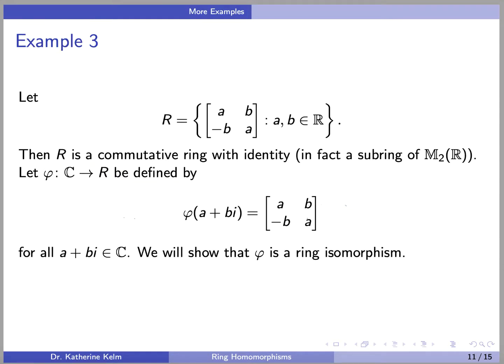For another example, let R be the ring of matrices of the form [A, B; −B, A] where A and B are real numbers. You can check that R is a commutative ring with identity — in fact, it is a subring of the ring of all 2×2 matrices with real entries. Let phi from the complex numbers to R be defined by phi(A + Bi) = [A, B; −B, A]. We will show that phi is a ring isomorphism.